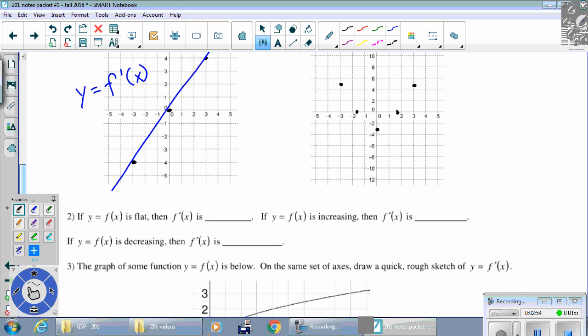And then we'll connect the dots on the derivative, something curvy, smooth. Don't make it have like a sharp point at the bottom there. So there's the graph of y equals f prime of x.